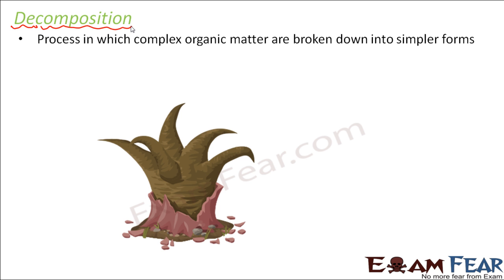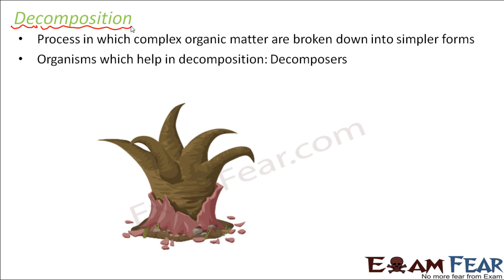The meaning of the term is quite simple. Whether you talk about plants or animals, they are all organic in nature — all carbon-containing substances. When a plant or animal dies, we are left with organic matter in complex form, because inside the body of living organisms everything is in quite complex form. These decomposers break down that complex organic matter into the simplest form possible. Organisms which help in decomposition are called decomposers, and the most important ones that come to mind are bacteria and fungi.